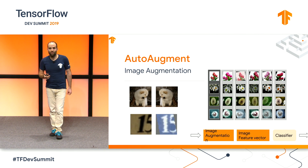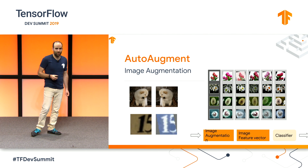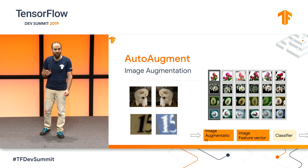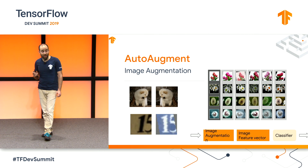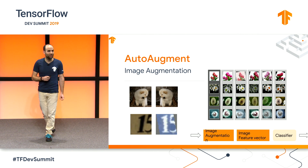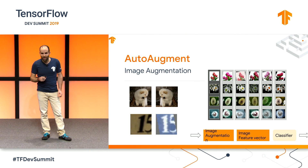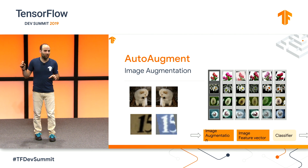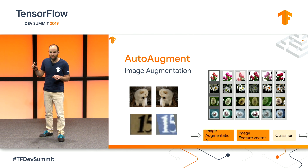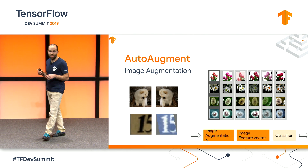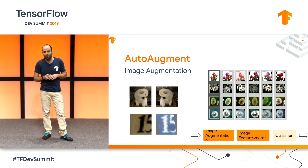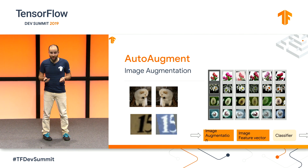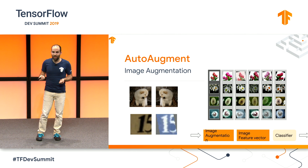We have also added image augmentation modules. The policies to augment images were trained by reinforcement learning on tasks such as ImageNet, and they have been shown to transfer to new tasks. An interesting thing is that you could grab this module and one of the image representation modules and string them together. In this case, the image augmentation module would reduce the amount of data needed via data augmentation, and the image feature vector by transfer learning.